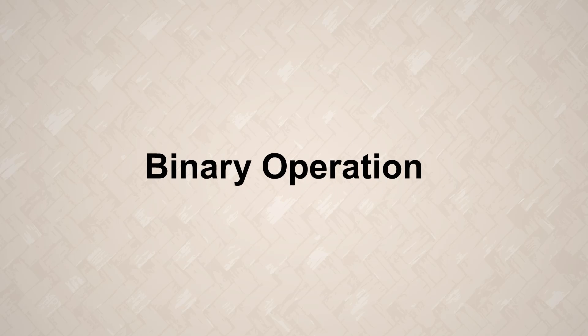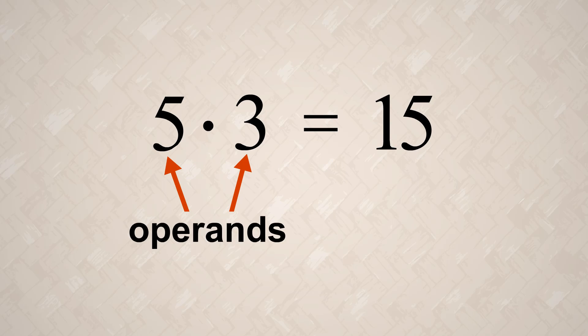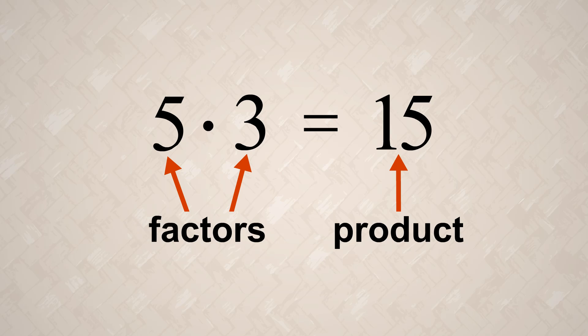Just like addition, multiplication is a binary operation which, as you may recall from our previous lecture, is a mathematical calculation involving two numbers. These numbers are called operands, and in the case of multiplication, these operands are multiplied together to produce a result called the product. In multiplication operations, the operands are sometimes referred to as factors.